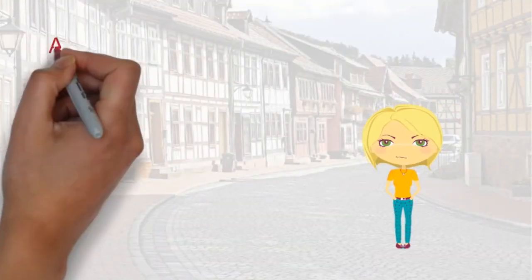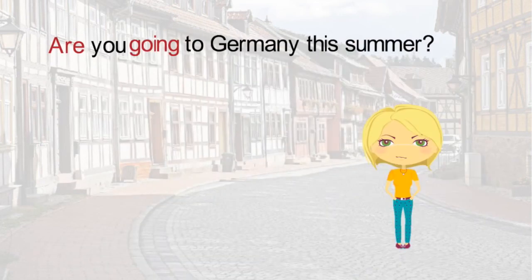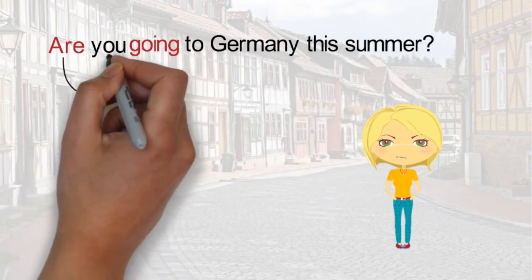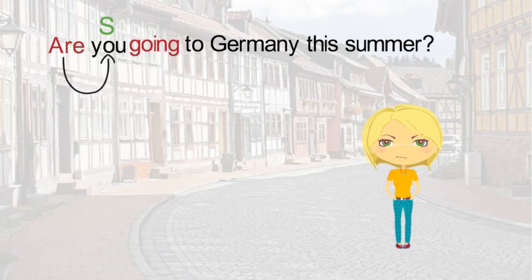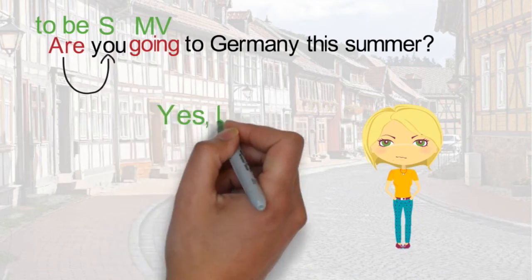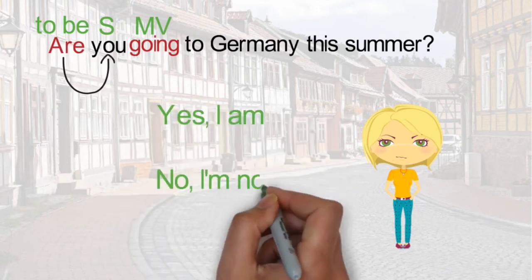Another example of this type of question is the following. Are you going to Germany this summer? Are is the correct form of the verb to be for you. Remember, the pronoun or the subject in these questions goes between the verb to be and the main verb. The answer could be either, yes I am, or no I'm not.